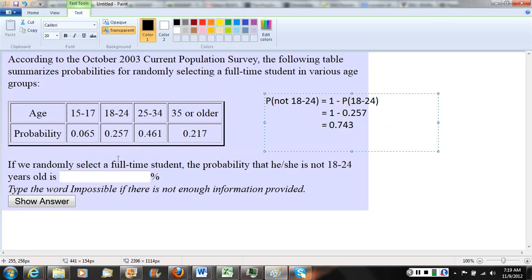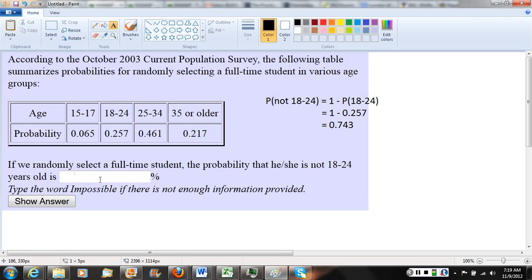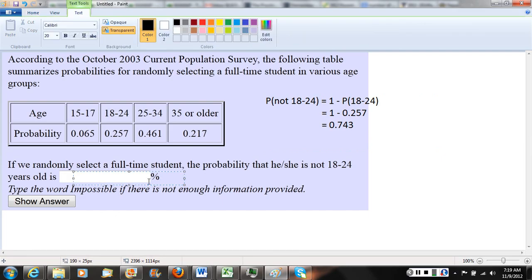So that would be my final answer. But notice they're asking for it as a percentage, so I don't want to report it as a decimal. To convert a decimal to a percent, I would multiply by 100, and that decimal number I would then get would be 74.3. So we would write 74.3 as a percent.